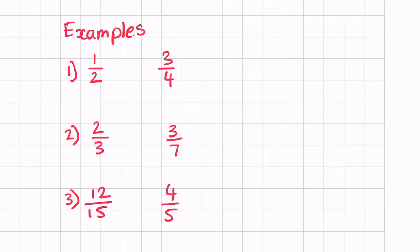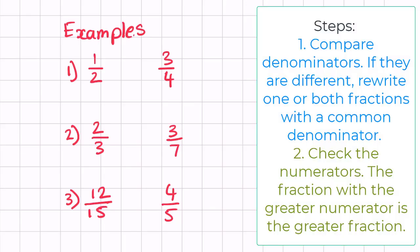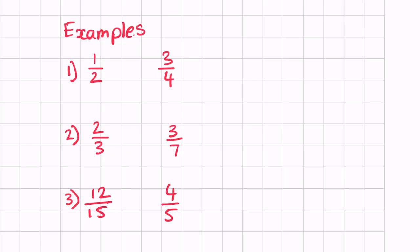Let's have a look at these examples. We have on the first example a half and three quarters. Because the denominators are different we need to make them the same, so we multiply the half — numerator and denominator — by two to get two over four. Now we can see three quarters is bigger than two quarters, so three quarters is larger and that's the answer.